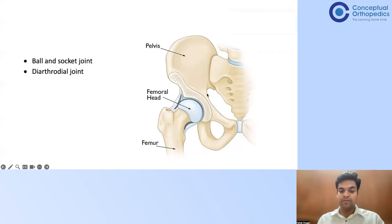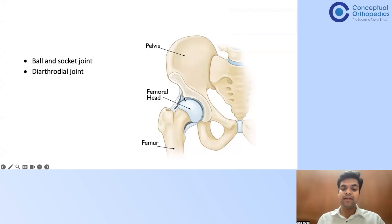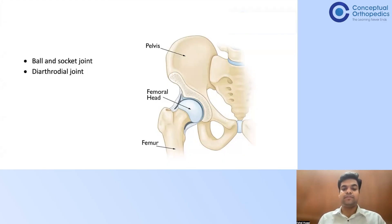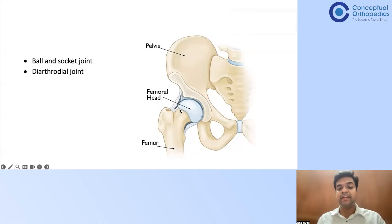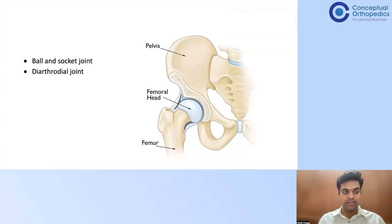Diarthrodial means 'di' means two, and arthrodial means any two structures which have got an articular cartilage. The femur has got cartilage and the acetabulum has got articular cartilage. A cavity is formed when it is completely covered — covered by the capsule. So any two articulating surfaces covered by cartilage and closed by a capsule which is lined internally by synovial membrane — those joints are called diarthrodial joints. It is a ball and socket joint.